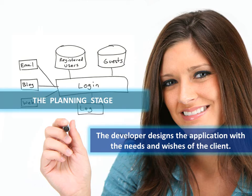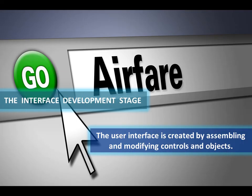The planning stage in software development is where the developer, the software engineer, or a team of engineers and developers meets with the client and figures out what the application needs to do, what features it needs to have, and what it should look like. That's all part of the planning stage. Then there's the interface development stage — we're actually building the application, how it looks and feels, by assembling objects together, sometimes referred to as controls. We might have a button that says 'go' on it, and when we click it, it does something. That's the interface.